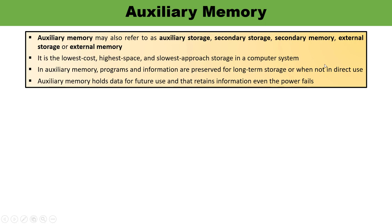First, to understand auxiliary memory — auxiliary memory is a kind of low-cost memory which contains some programs or information for the long term, or sometimes when there is no direct use of that particular information. So auxiliary memory is a low-cost, highest space, and slowest approach storage in any computer system. You must remember this.